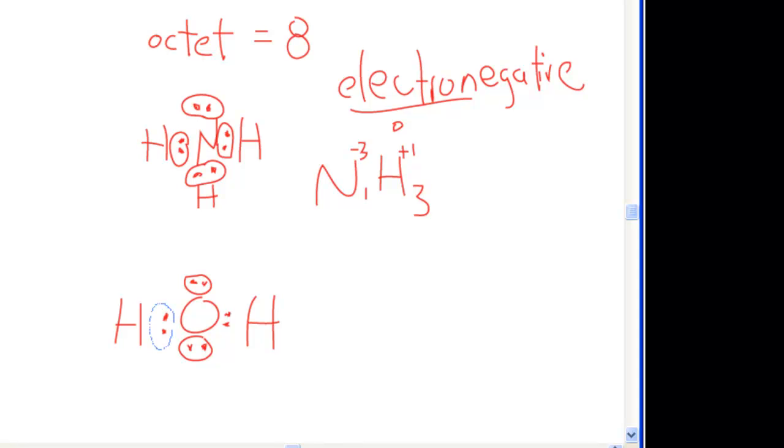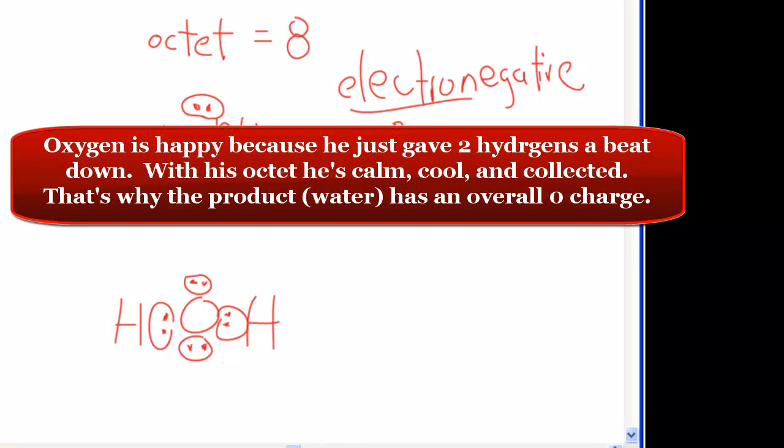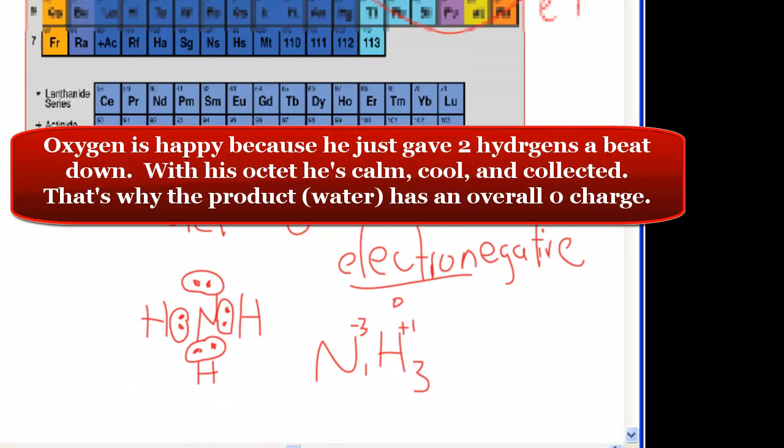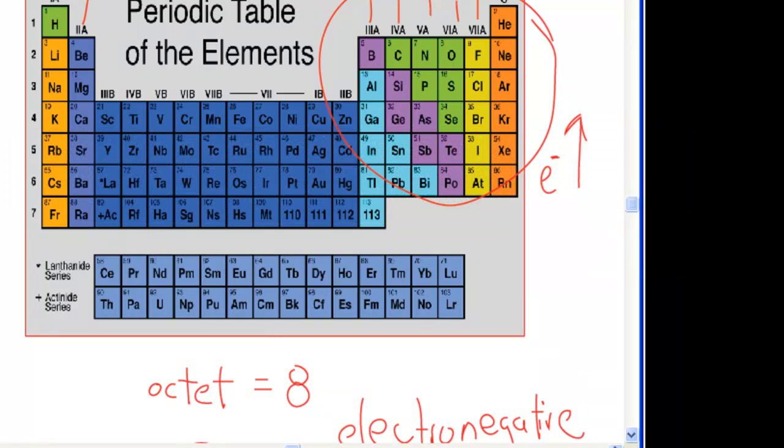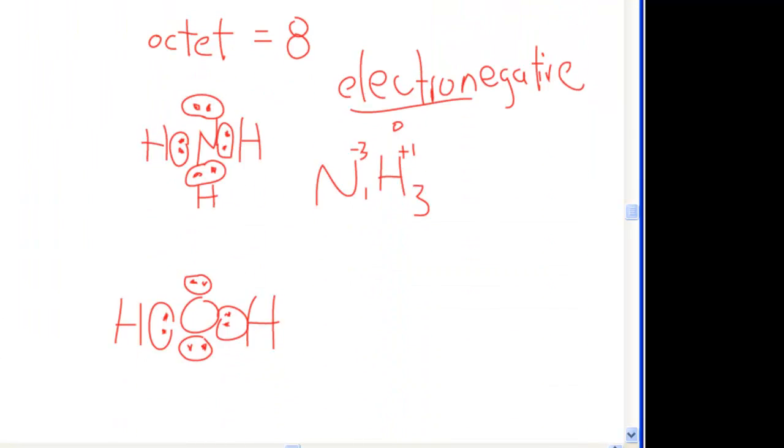So now we have another lone pair here, another lone pair here. These guys are happy, these guys are happy, these guys were already happy. Does it fulfill the octet? Let's see. Two, four, six, eight electrons. And it does. And again, remember, since oxygen is the more electronegative atom than hydrogen because of that high electron density surrounding it, it's going to pluck off the electron from the hydrogen. So, in other words, of course this is water, if you haven't guessed already.